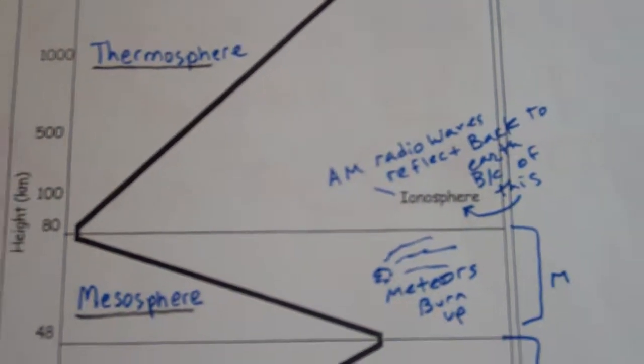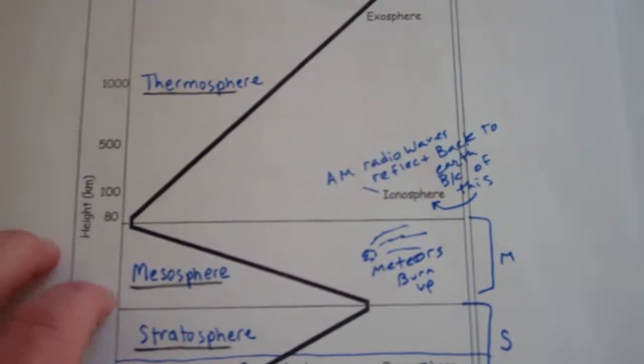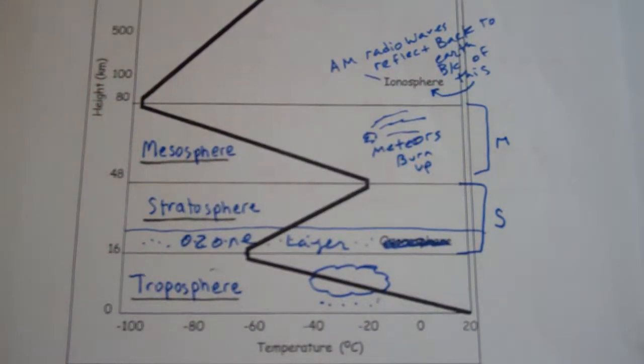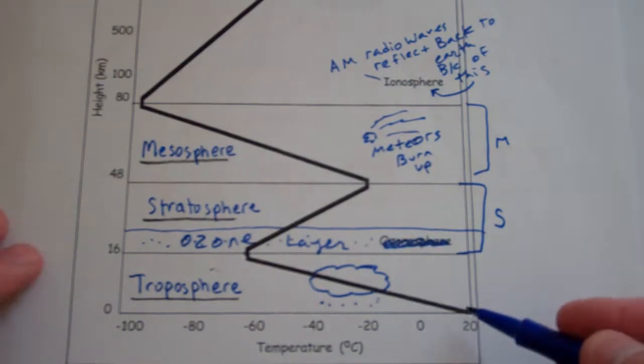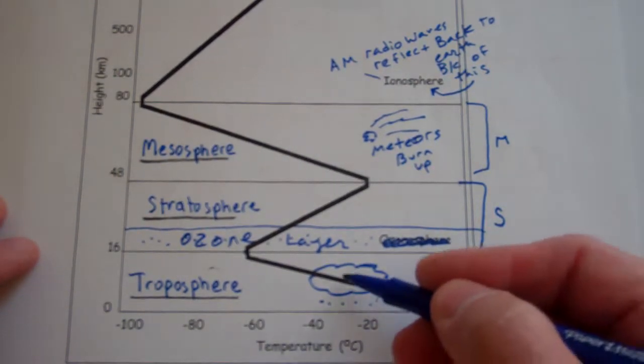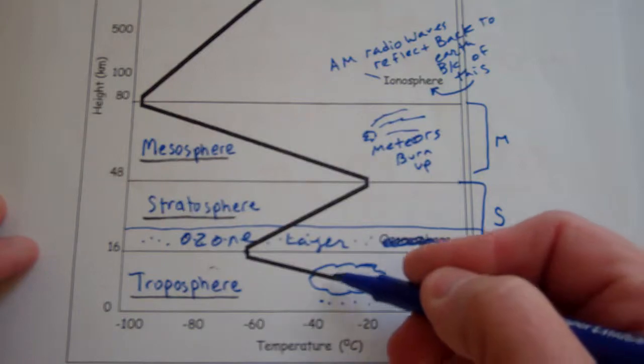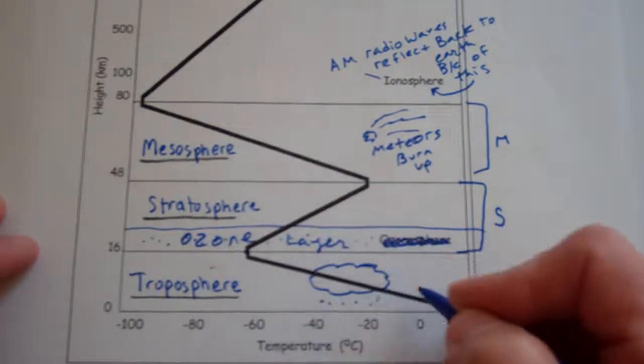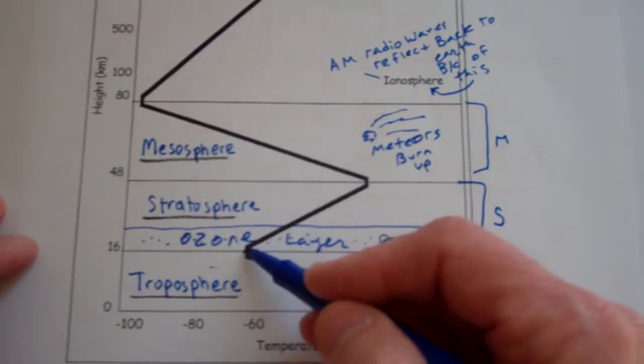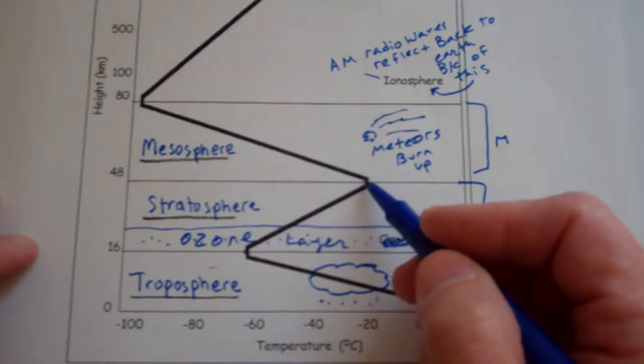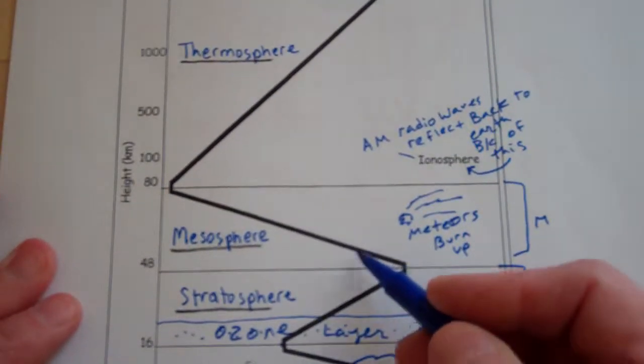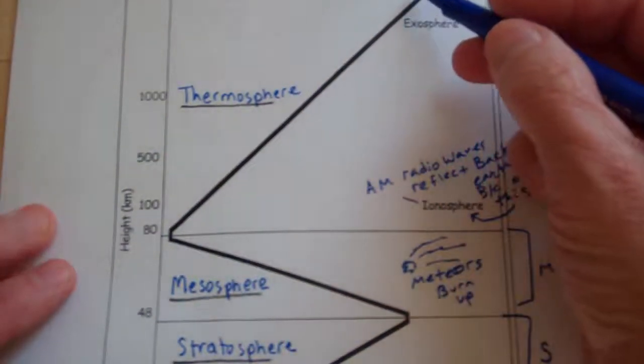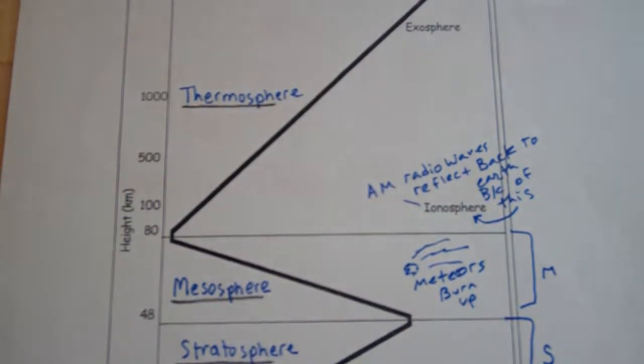So the other thing to know is what happens to the temperature as you go up in altitude in each of these layers. In the troposphere, basically as you go up, you get colder. So this graph is showing that as we climb, we're getting colder. As you climb here, you're getting warmer. As you climb here, you're getting colder. As you climb here, you're getting warmer. All right. That's enough talking.